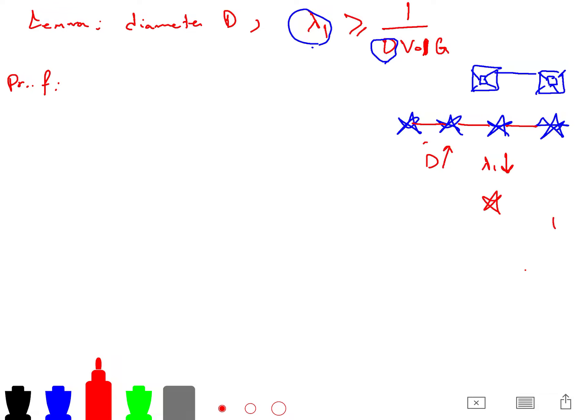For example, if they are something like this, so we guess that there are three eigenvalues close to zero. And this is a conjecture of Cheeger that I will explain later. But the proof of this is very simple.